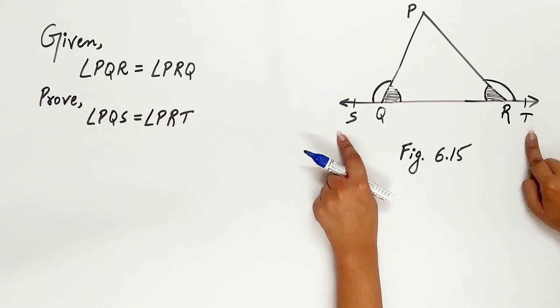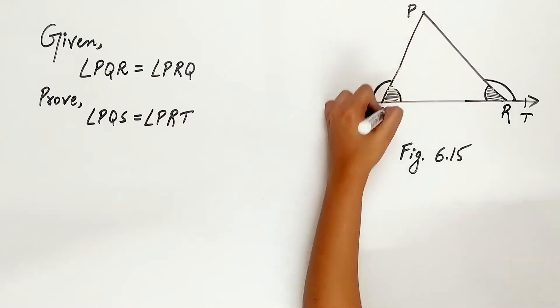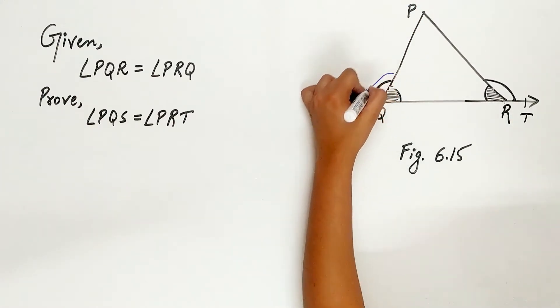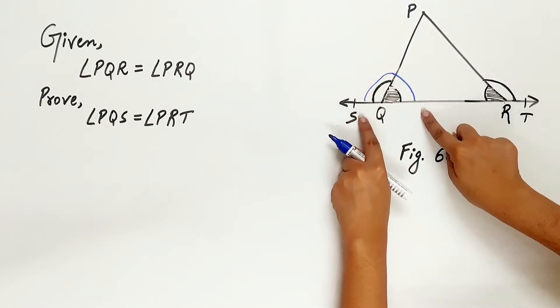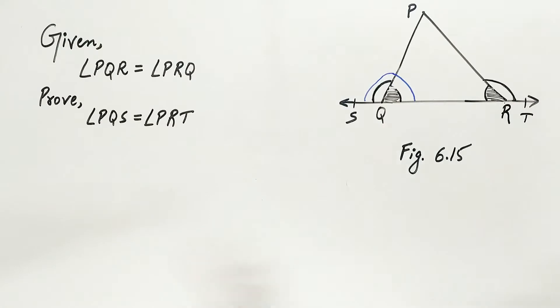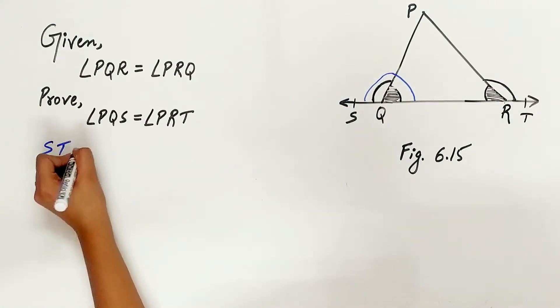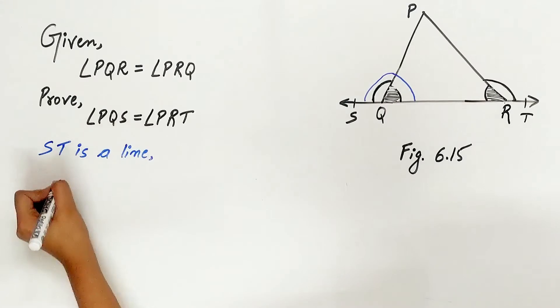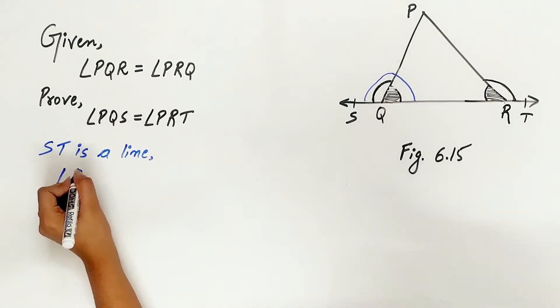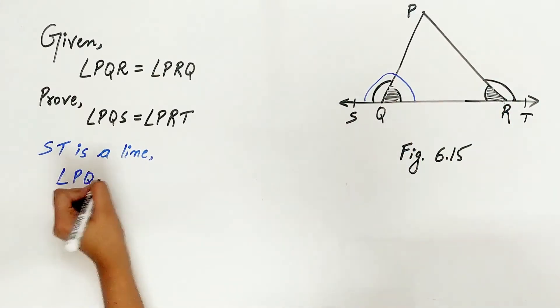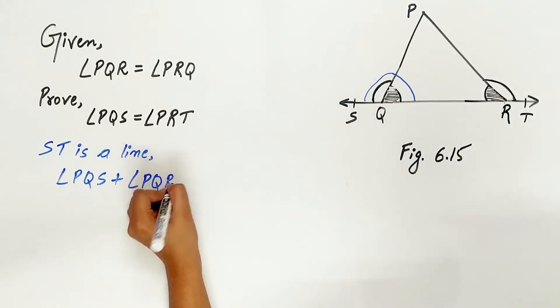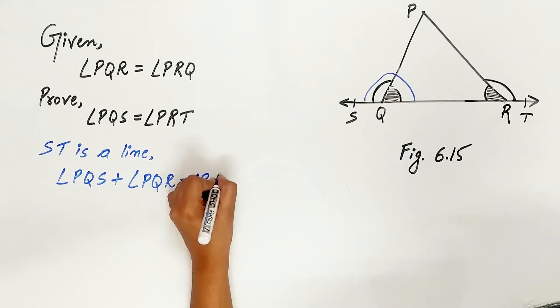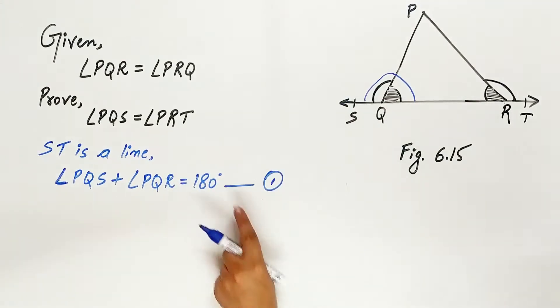ST is a line. So angle PQS and angle PQR form a linear pair. Angle PQS plus angle PQR is equal to 180 degrees. Let's mark it as equation 1.